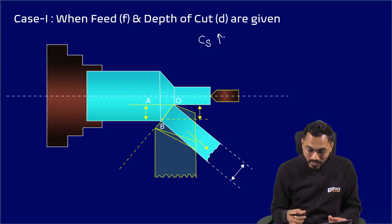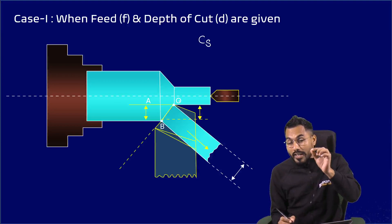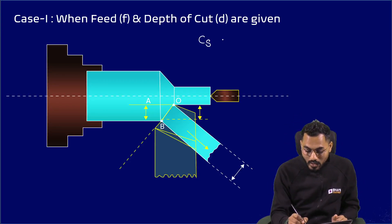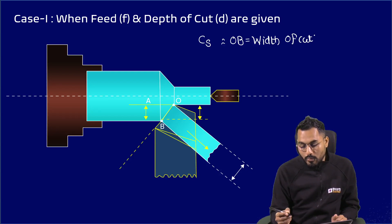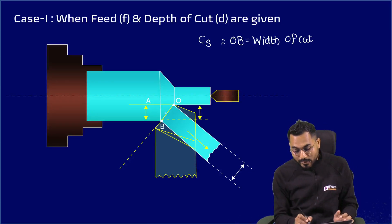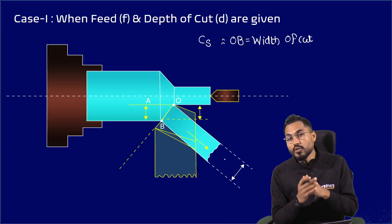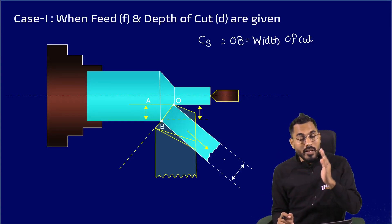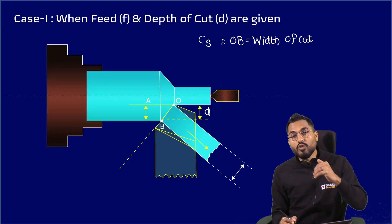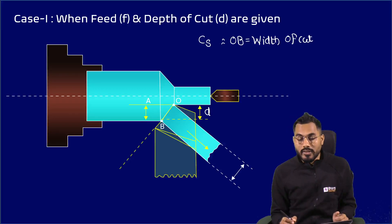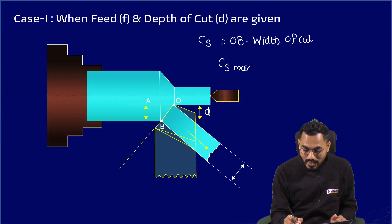As the side cutting edge angle C_s starts increasing, the width of cut — which is the length of the cutting edge in contact with the workpiece (OB in the figure) — keeps increasing. This diverts the chip away from the machining zone, which is beneficial. However, for the same depth of cut, as C_s increases the width of cut increases, so power consumption also increases. Therefore, the maximum value of C_s is restricted to 35 degrees.